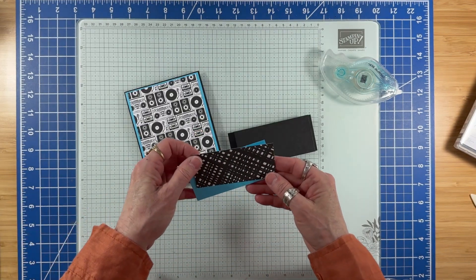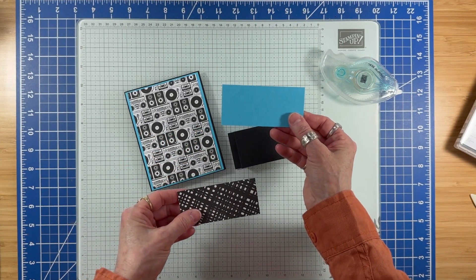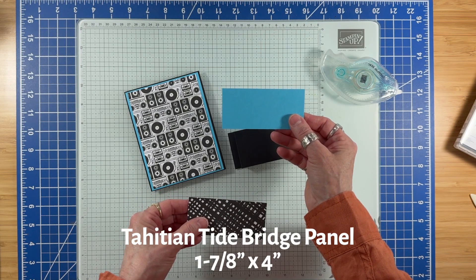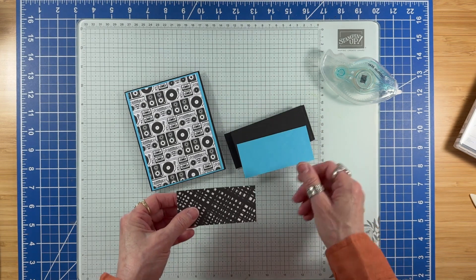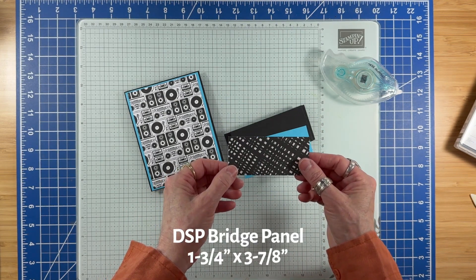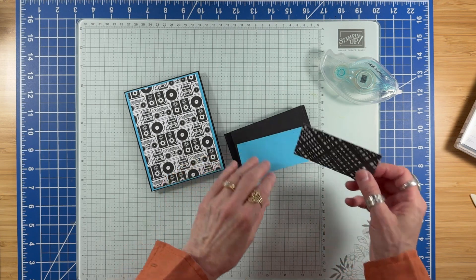For my bridge panel, I have another piece of Tahitian Tide cardstock measuring 1.875 by 4 inches, and the DSP measures 1.75 by 3.875 inches.